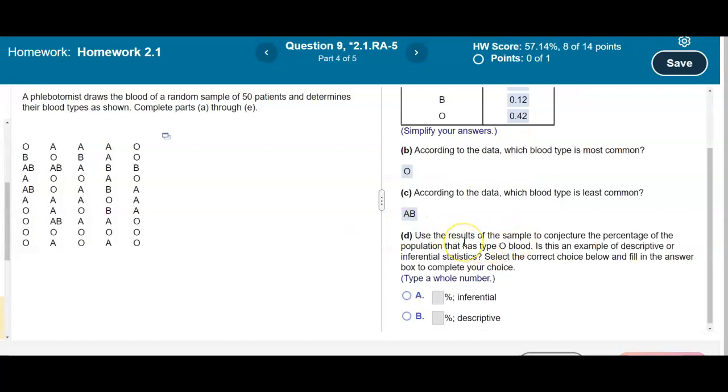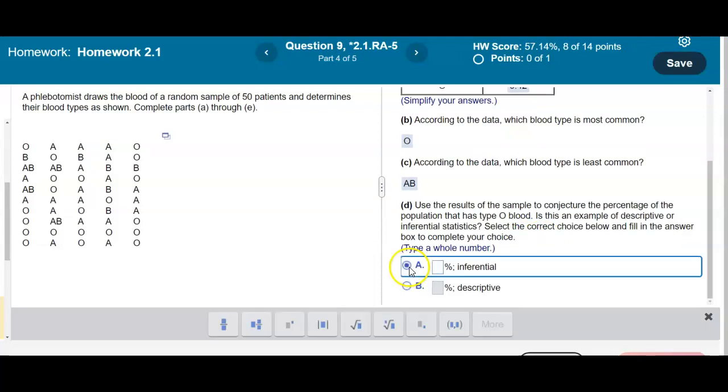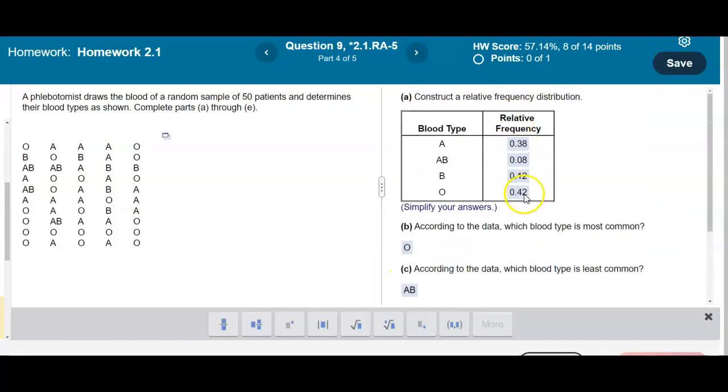Now it says, use the results of the sample to conjecture the percentage of the population that has type O blood. Is this an example of descriptive or inferential statistics? And then we're going to select the correct choice below and fill in the answer.